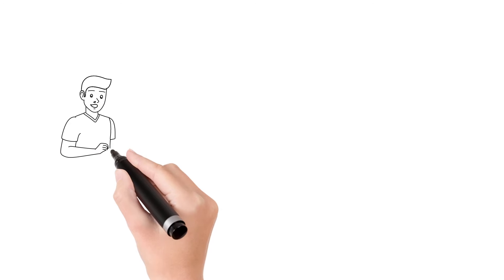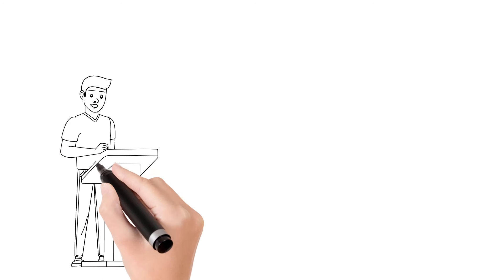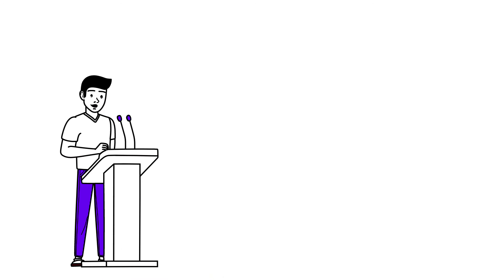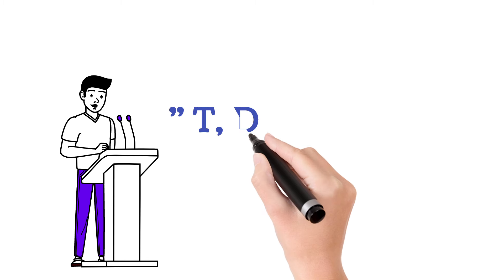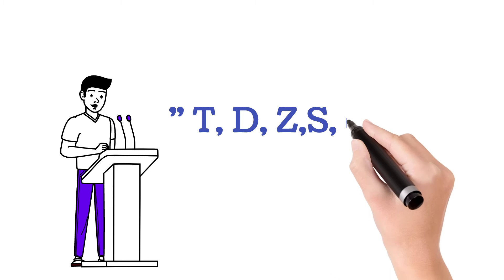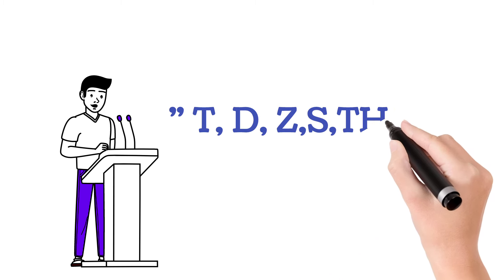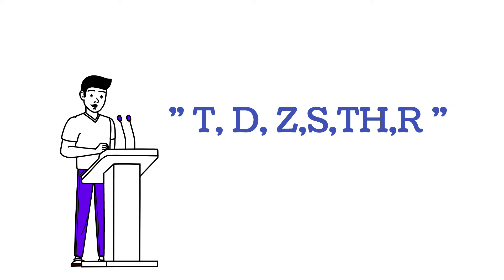People with tongue tie can't spell words properly — there will be speech impairment, especially with letters like T, D, Z, S, and R, which can't be pronounced properly.